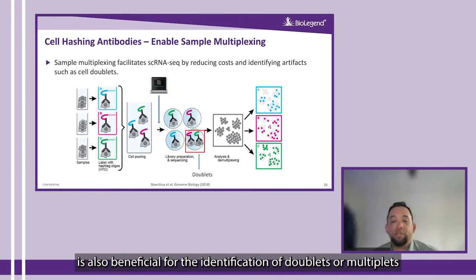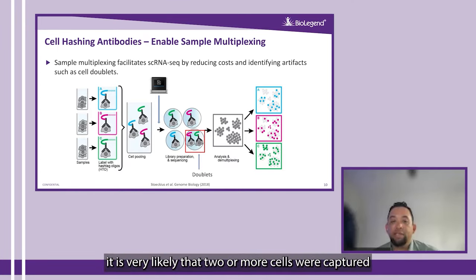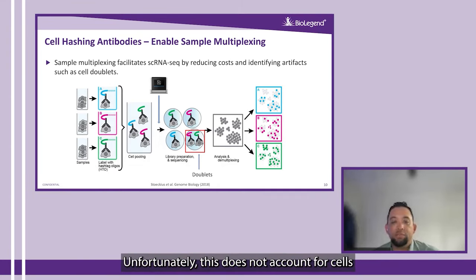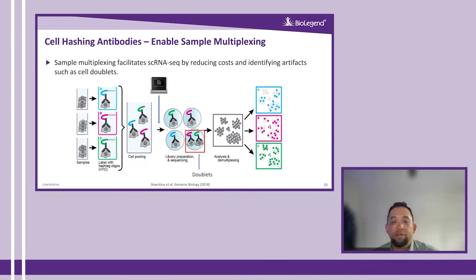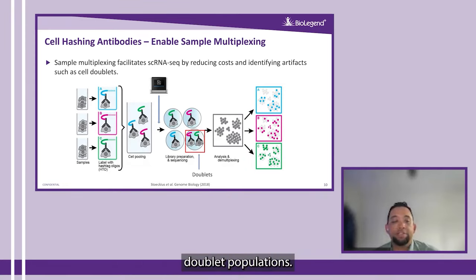Hashtagging is also beneficial for identification of doublets or multiplets generated during cell partitioning. If a data point has more than one hashtag, it is very likely that two or more cells were captured together in an emulsion. Unfortunately, this does not account for cells with the same hashtag being captured together, but it still gives you another method for identifying doublet populations.